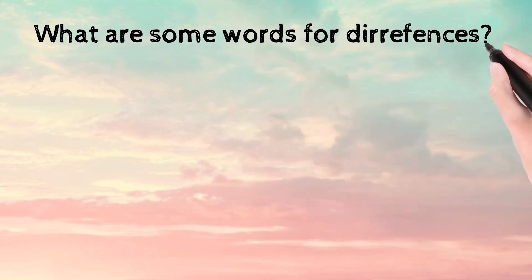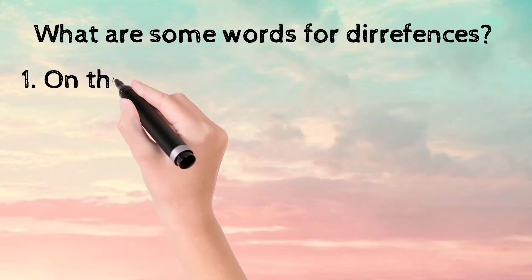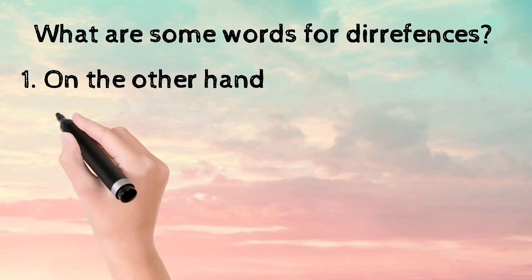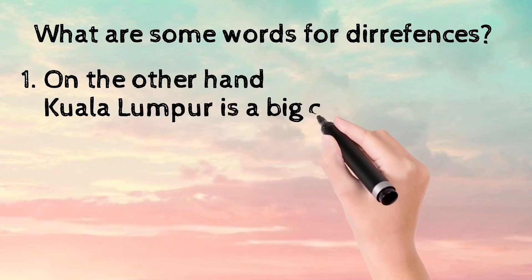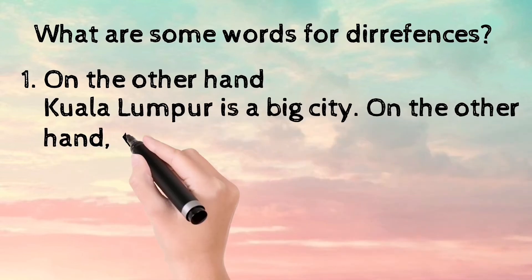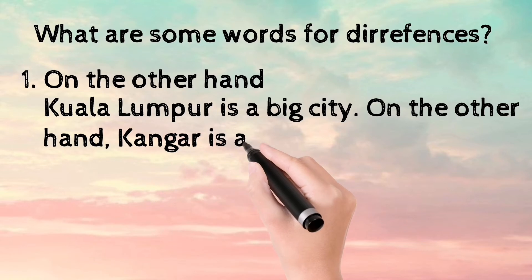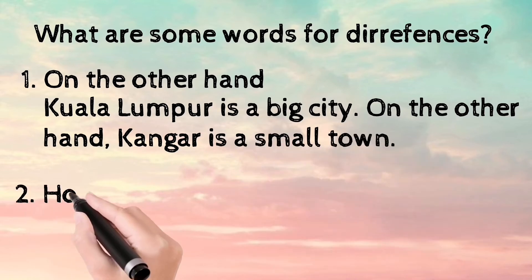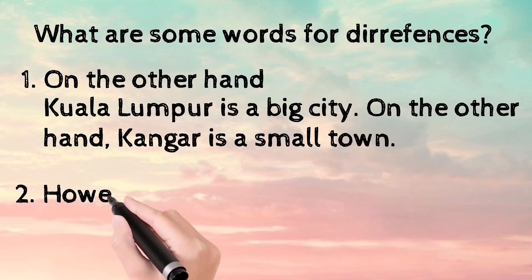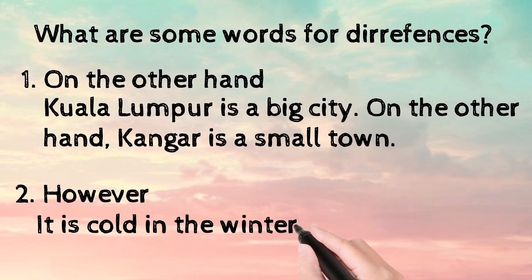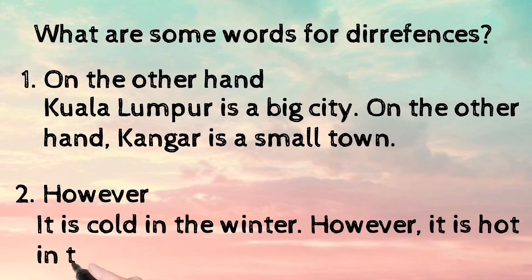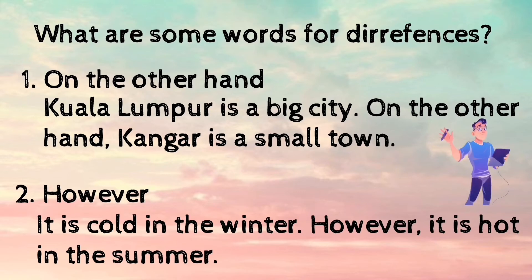What are some words for differences? The first example is 'on the other hand.' Kuala Lumpur is a big city. On the other hand, Kanga is a small town. The second example is 'however.' It is cold in the winter. However, it is hot in the summer.